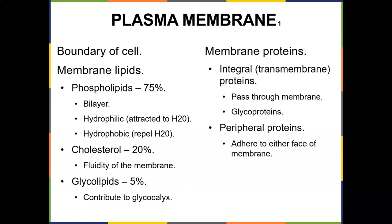You also have membrane proteins — integral transmembrane proteins that pass through the membrane — as well as glycoproteins and peripheral proteins that adhere to either face of the membrane. These proteins help larger structures go in and out of the plasma membrane.